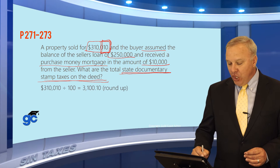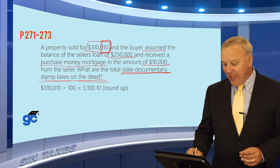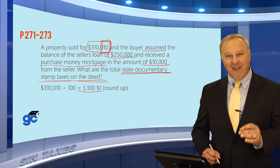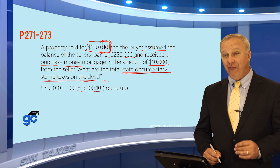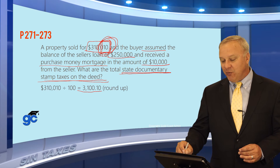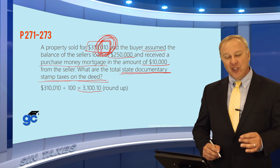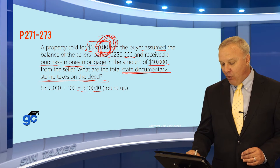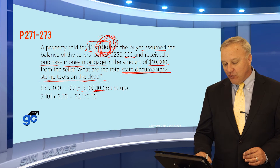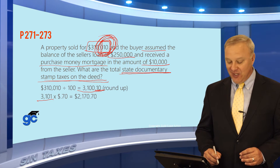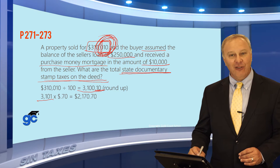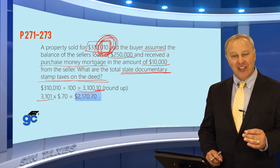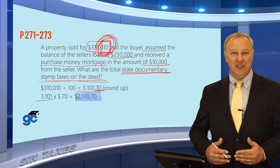$310,010 divided by 100 equals $3,100.10. Remember the rate is $0.70 per $100 or fraction thereof — that's the trick with the odd sales price. You must round up this fractional portion, so you end up with $3,101 times $0.70, which gives you $2,170.70 as the state doc stamp tax on the deed. You've now answered that question, even though there was extra information you didn't need.